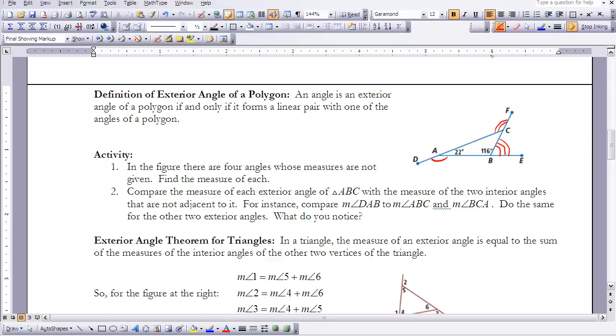I have an activity here. I'll read through it and then I'm going to have you stop the video. In the figure, there are four angles whose measures are not given. Find the measure of each, and if you know it forms a linear pair, you can find that by subtracting from 180. Then I want you to compare the measure of each exterior angle of triangle ABC with the measure of the two interior angles that are not adjacent to it. For instance, compare angle DAB to angle ABC and angle BCA. Do the same for the other two exterior angles, and decide if you see any connection. Please stop the video now and do the activity.